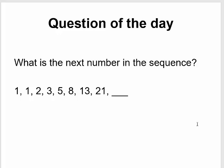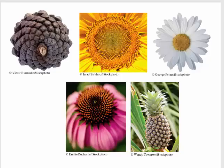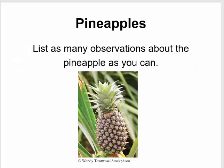Looking at it initially, I'm not sure what the pattern is. So let me give you some pictures of things in nature where these numbers come up quite a bit. If you look here, these are images from plants in the real world, and you can see there's a spiral pattern. It looks like there's some symmetry in the number of spirals on this pineapple and the leaves on this daisy.